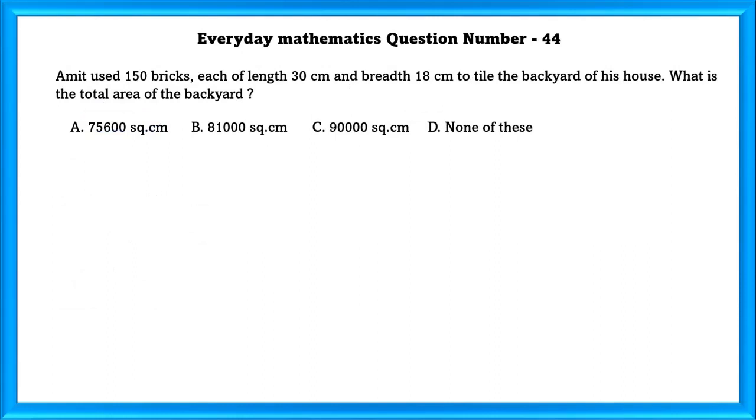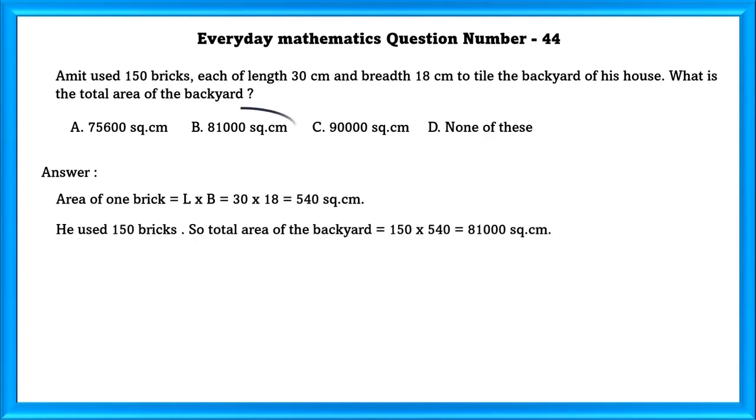Every day mathematics question number 44. Amit used 50 bricks, each of length 30 cm and breadth 18 cm to tile the backyard of his house. What is the total area of the backyard? Area of 1 brick is equal to 540 square centimeter. He used 150 bricks. So, the total area of the backyard is equal to 81,000 square centimeter.